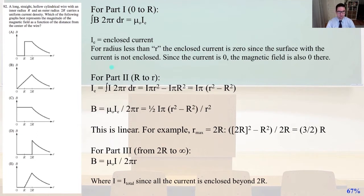So for part one, which is from zero to R, the integral of B, 2 pi R dr equals μ₀I_E, and I_E equals the enclosed current. So for radius less than R, the enclosed current is zero, since the surface with the current is not enclosed. So since the current is zero, the magnetic field is also zero there.